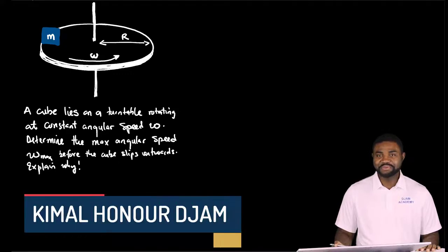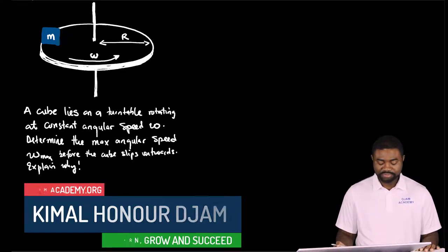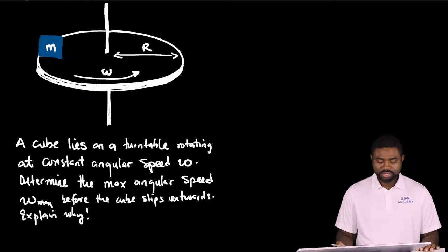Hello everyone and welcome to Jam Academy. In this example, a cube of mass m lies on a turntable rotating at a constant angular velocity omega.